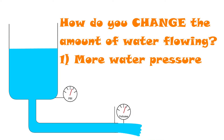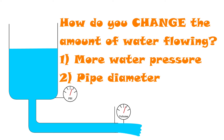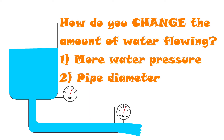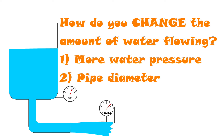You could also change the diameter or the length of the pipe. If you make the pipe large in diameter, you'll get more water flowing without increasing the water pressure, because you've made it easier for the water to flow — you've decreased the pipe's resistance to water flow. Similarly, if you make the pipe skinnier, you increase its resistance, which means you'll get less water flowing for the same amount of pressure. A longer pipe also creates more resistance than a shorter one.